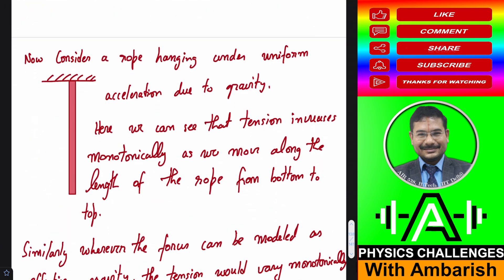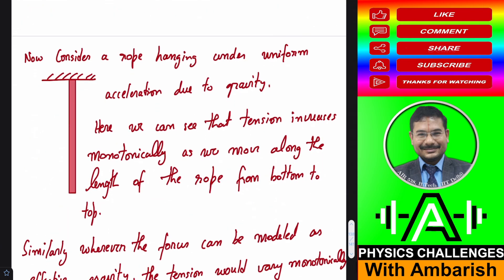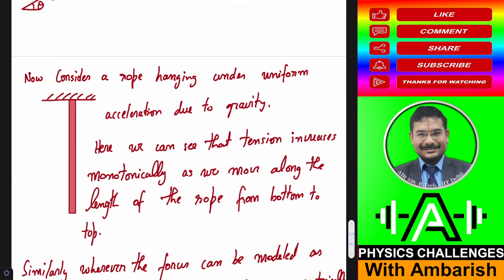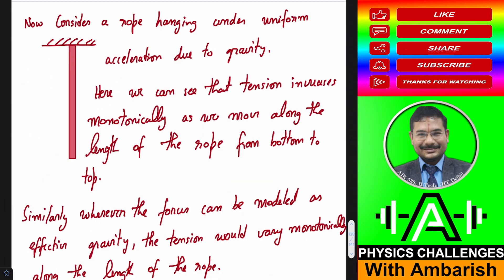Now when we can talk about effective acceleration due to gravity, we can compare the situation to a rope hanging under uniform acceleration. You know that whenever a rope is hanging under uniform acceleration due to gravity, the tension increases monotonically. In normal cases, acceleration due to gravity is downward, so tension keeps on increasing. If acceleration were upward, then the tension would increase in the other direction.